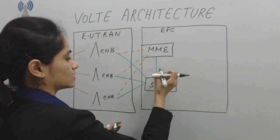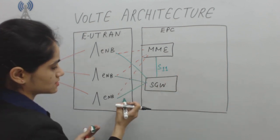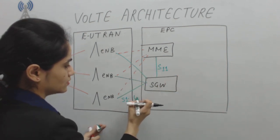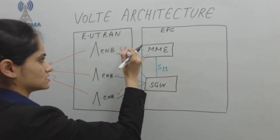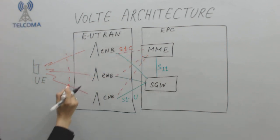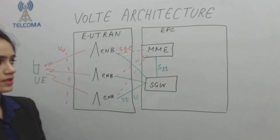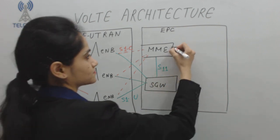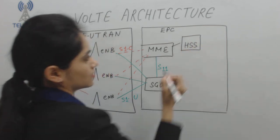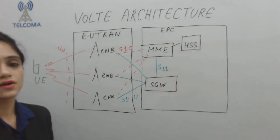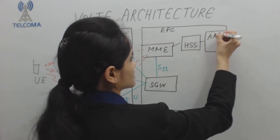The MME and SGW are connected to one another via the S11 interface. The S1-U is the user-plane interface, S1-C is the control-plane interface, and the UU interface connects the UE to the eNodeB. After that, we have the HSS (Home Subscriber Server) attached, along with an AAA authentication server.